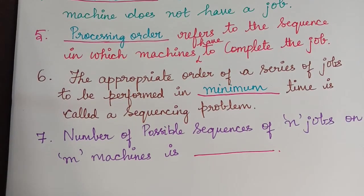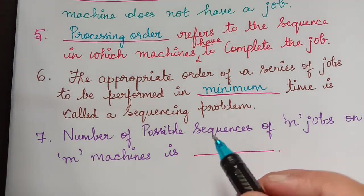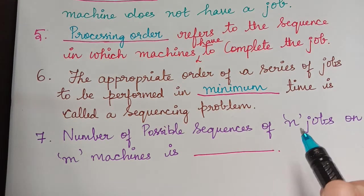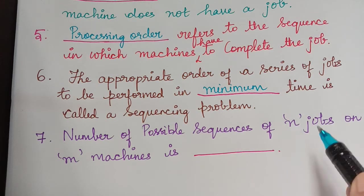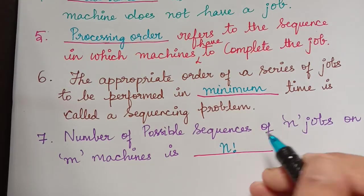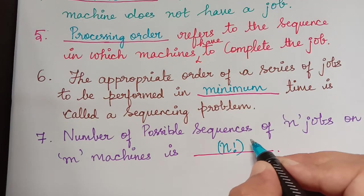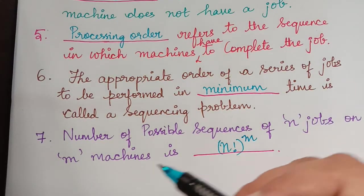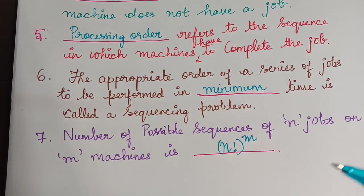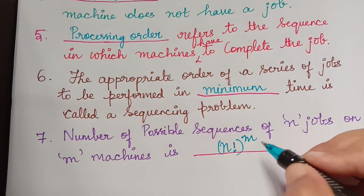The next question is: the number of possible sequences of n jobs on m machines is dash. The number of possible sequences when we have n jobs on m machines is given by n factorial raised to the power of m. First we find n factorial, then raise it to the power of the number of machines, which is m. Therefore the answer is n factorial raised to the power of m.